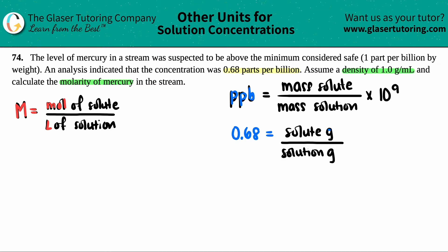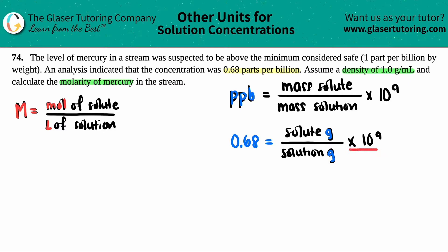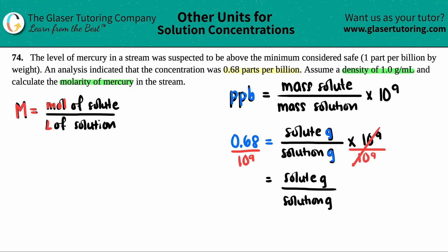To solve for the ratio, I divide both sides by 10⁹, which cancels on the right. That gives me: grams of solute / grams of solution = 0.68 ÷ 10⁹ = 6.8 × 10⁻¹⁰.